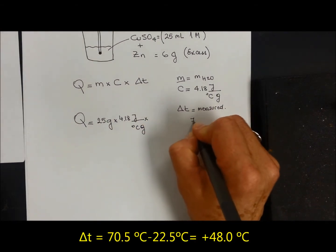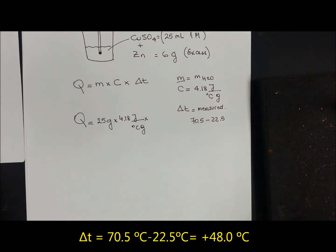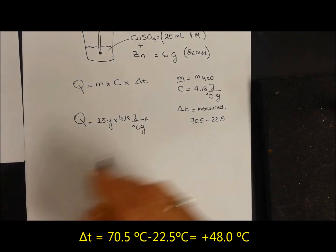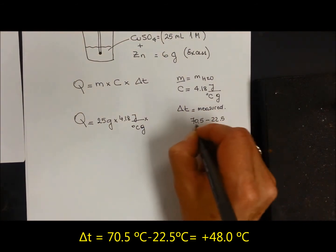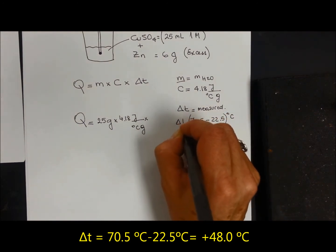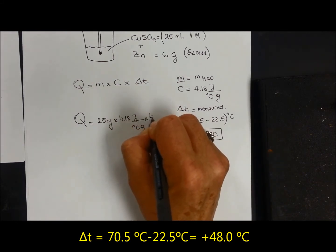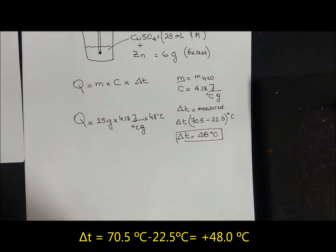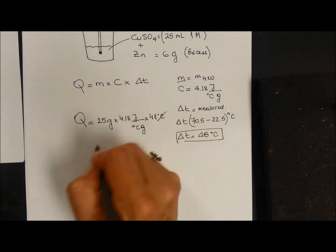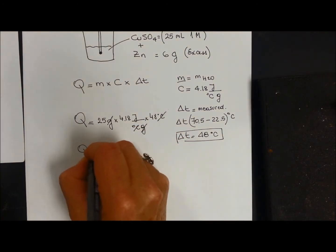And delta T is 70.5 minus 22.5. So the delta T is 48 Celsius. So 48 Celsius is what we have here. So we cancel Celsius with Celsius, grams with grams, and we can calculate Q.